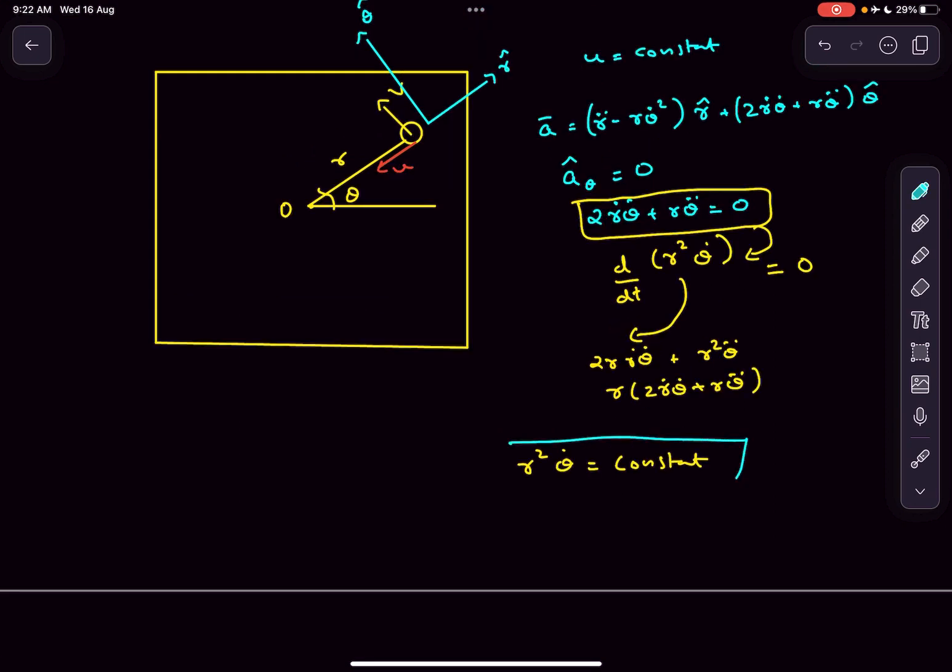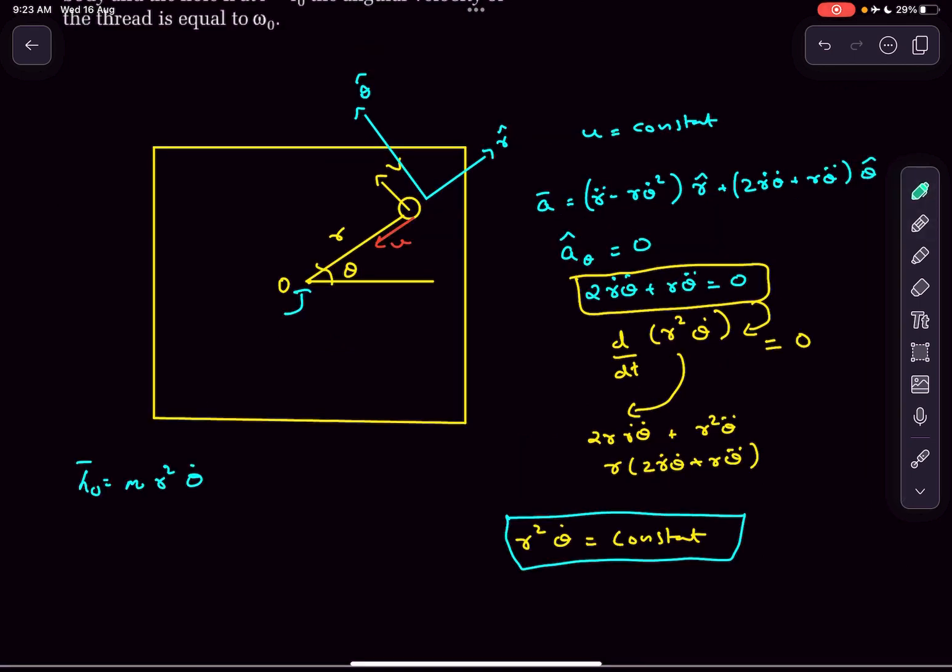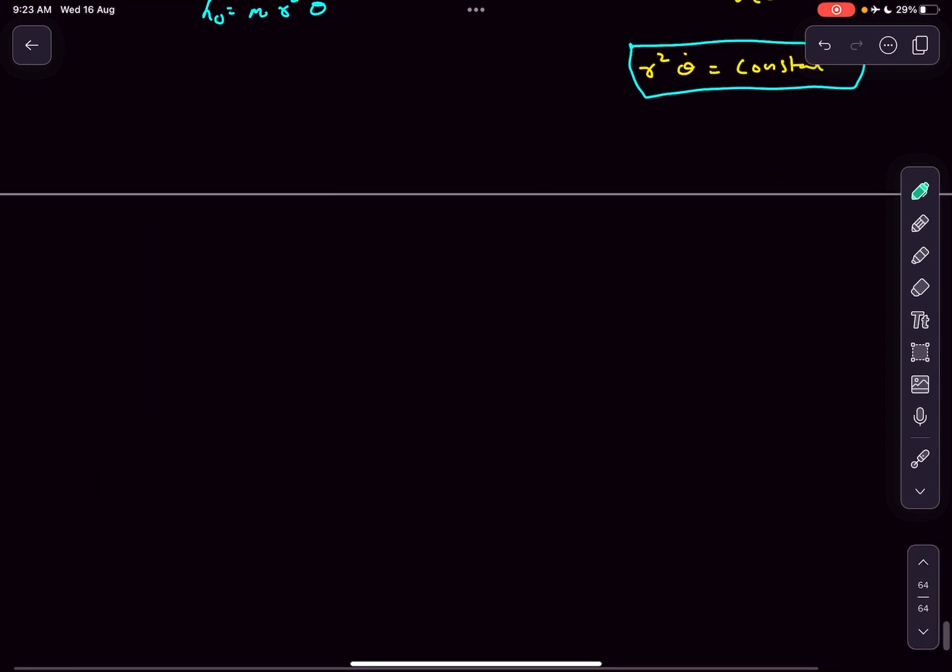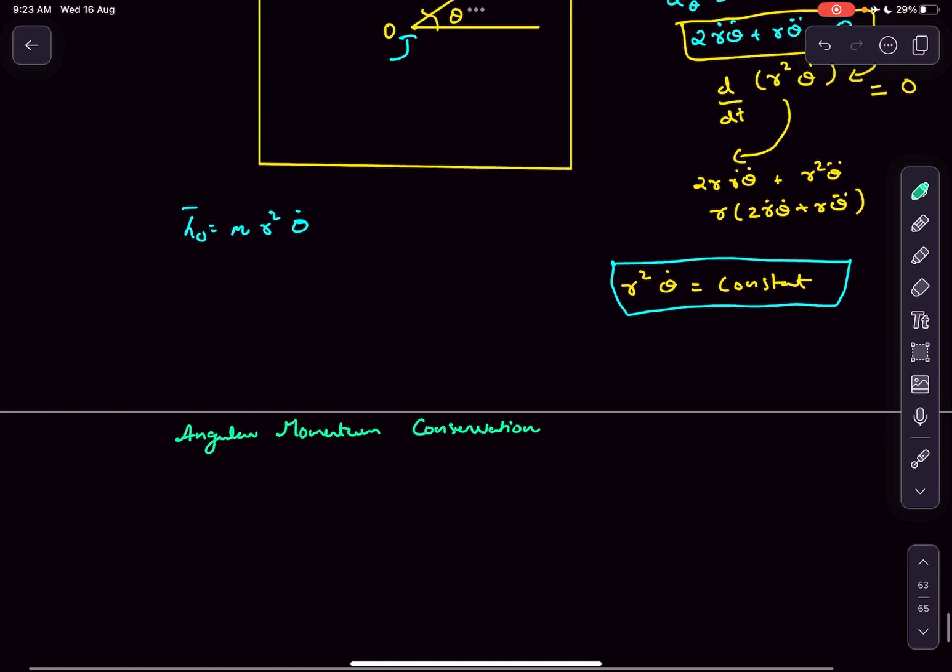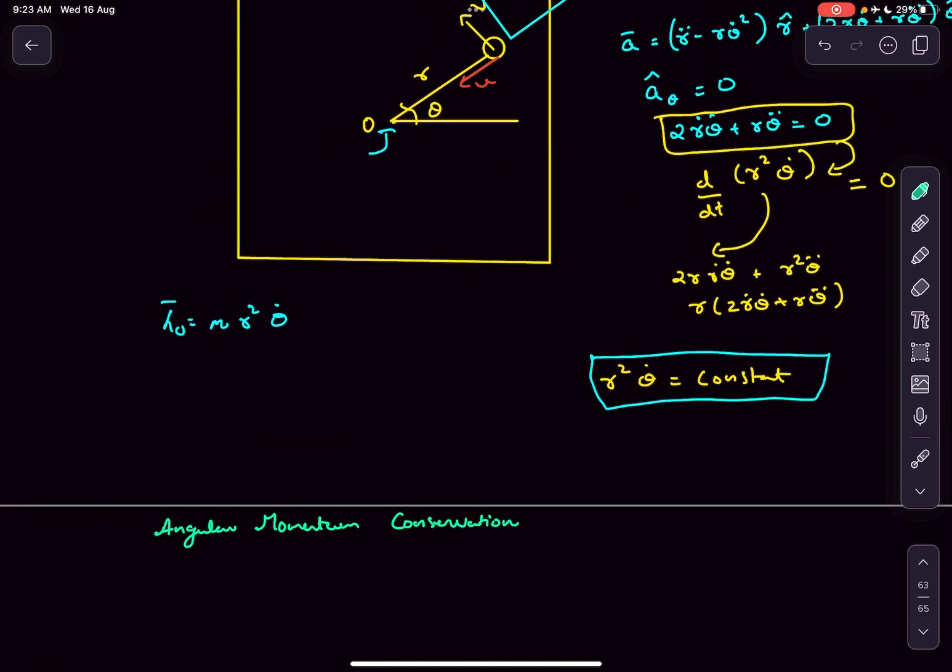This equation tells us the angular momentum of mass m about point O is constant, because angular momentum is m r square times omega or theta dot. We can observe this from the fact that there's no torque acting on mass m about point O. This is the first fact we're using: angular momentum about point O is conserved.